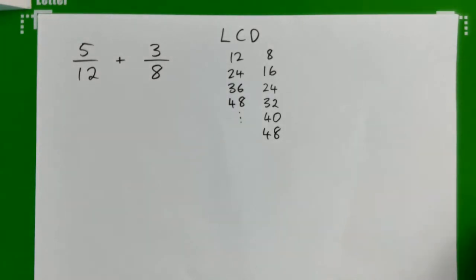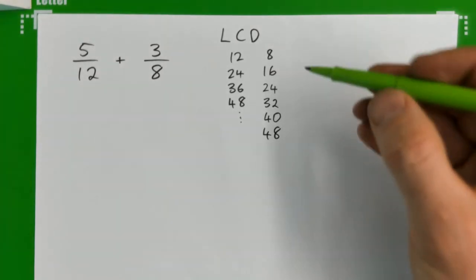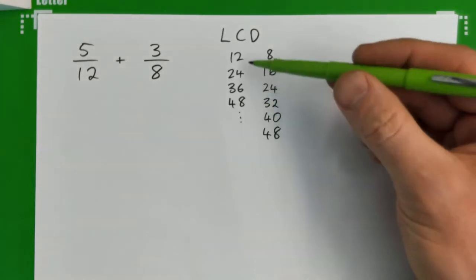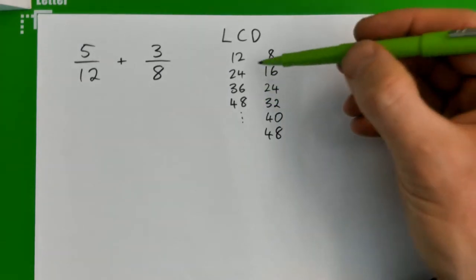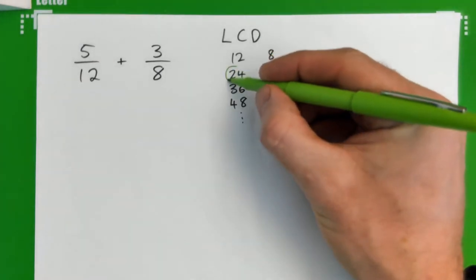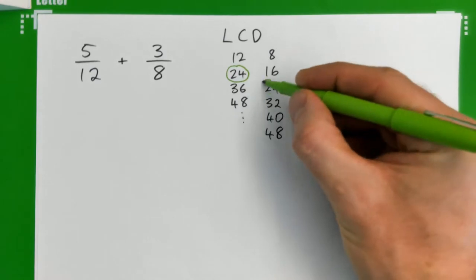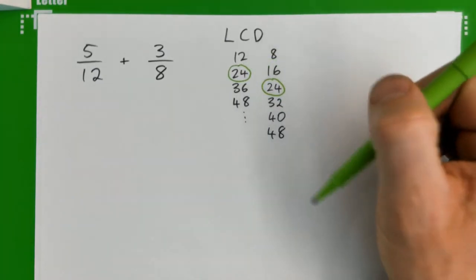What I mean by the lowest common multiple is, 48 is a multiple of 12 and 8, but so is 24. And 24 is the smallest number that is a multiple of both 12 and 8.